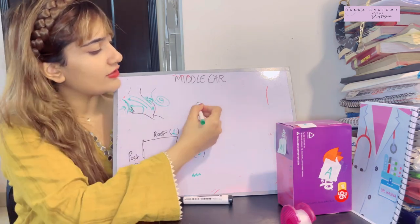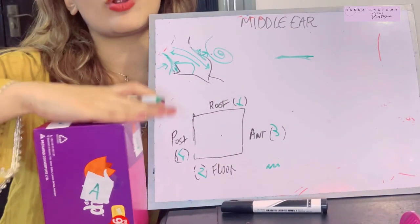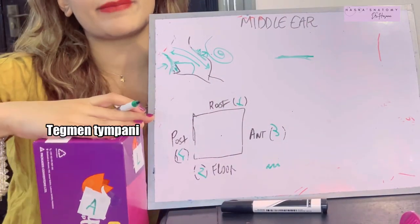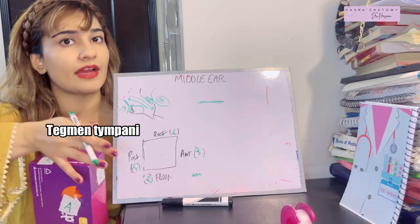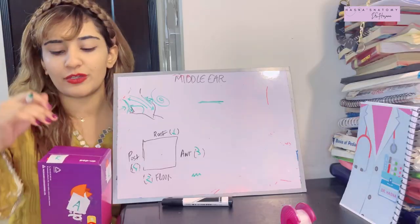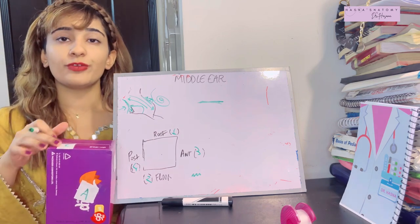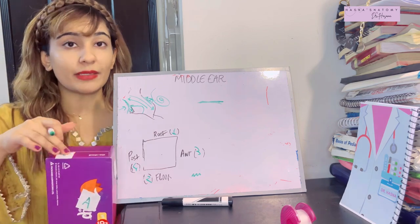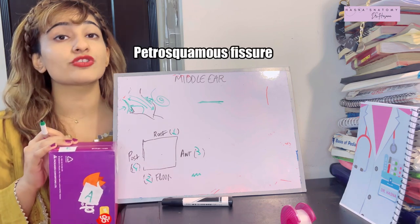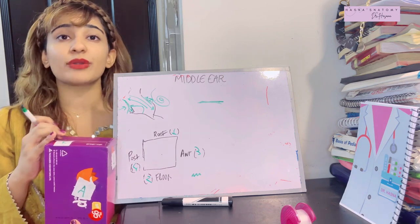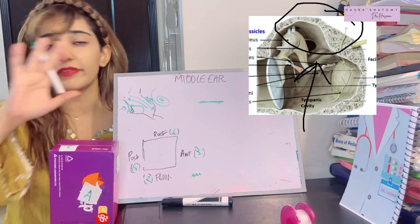The roof is known as the tegmental wall, lined by a bone called the tegmen tympani, which is part of the temporal bone visible from the cranial cavity. Interestingly, in children, where the tegmen tympani lies, there is a fissure called the petrosquamous fissure.